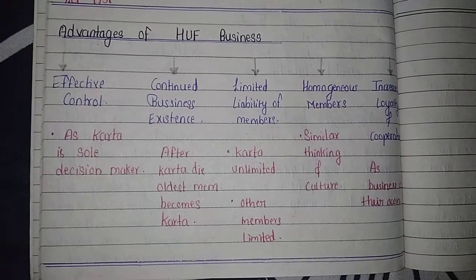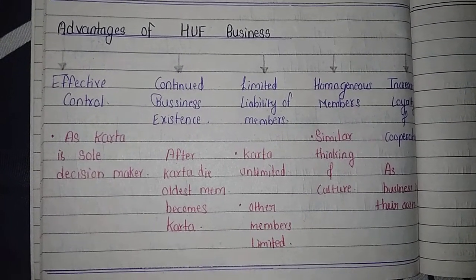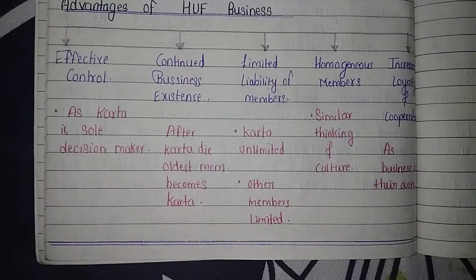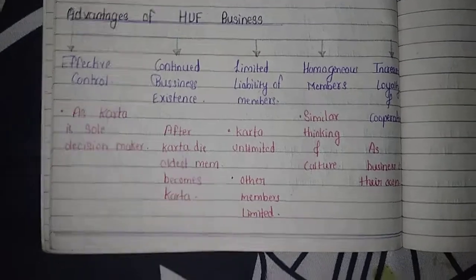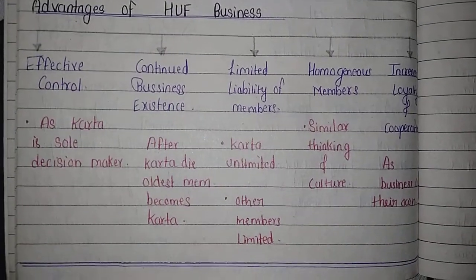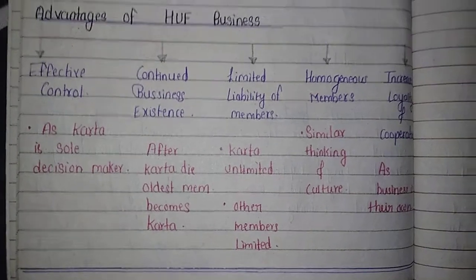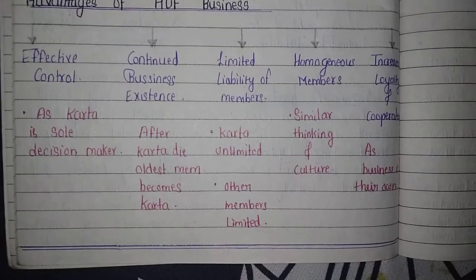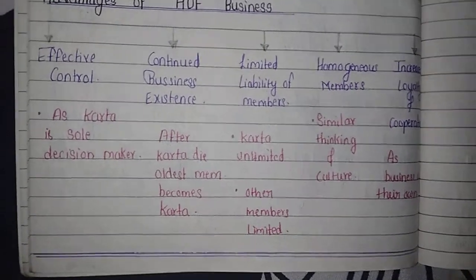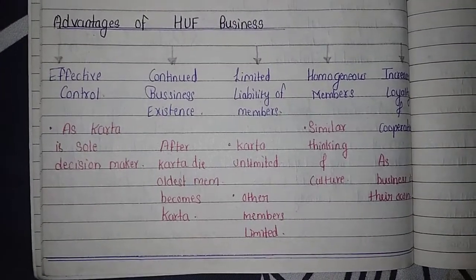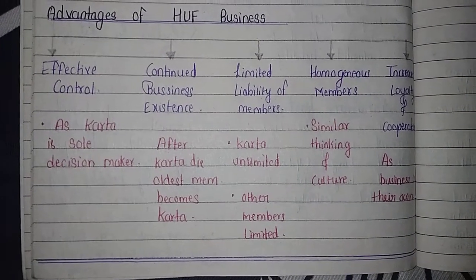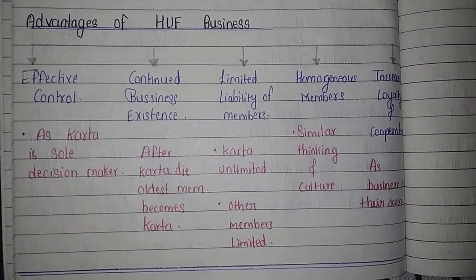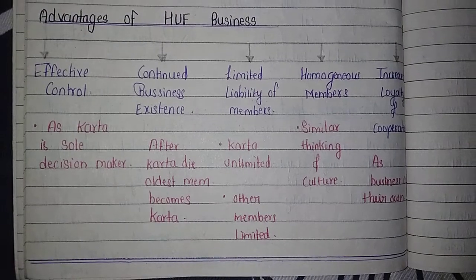The advantages of HUF business: first is effective control — since the Karta is the sole decision maker, decisions are very effective. Second is continued business existence — as studied in features, after the death of the Karta the oldest member becomes Karta, so existence continues. Third is limited liability of members — only the Karta's liability is unlimited; all other members have limited liability.